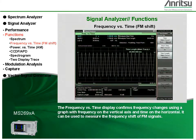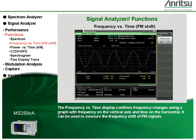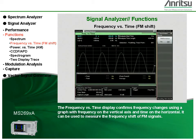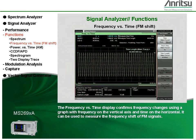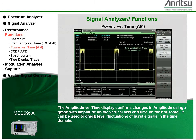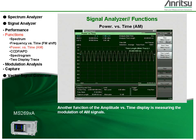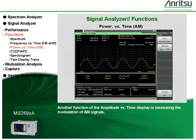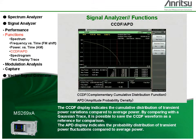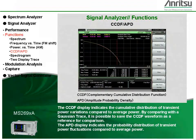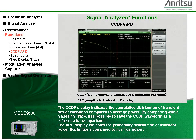It's ideal for checking transient fluctuations and burst signal rise and fall times. The frequency versus time display confirms frequency changes using a graph with frequency on the vertical axis and time on the horizontal. It can be used to check fluctuations of burst signals in the time domain. Another function, the amplitude versus time display, is used for measuring the modulation of AM signals. The CCDF display indicates the cumulative distribution of transient power variations compared to average power. By comparing with a Gaussian trace, it's possible to save the CCDF waveform as a reference for comparison.